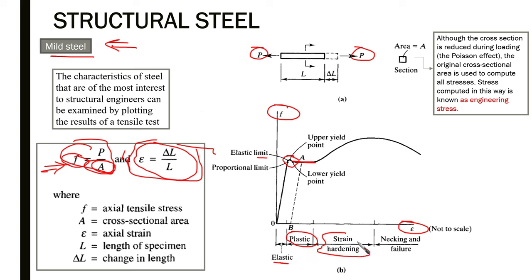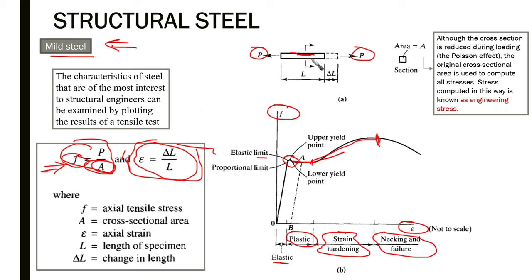After the plastic plateau, the next phase is strain hardening, where the stress increases above the yield level as the material shows higher stress. This continues until it reaches the necking and failure phase, where the cross-section becomes highly reduced until fracture occurs. This completes the description of the mild steel stress-strain curve.